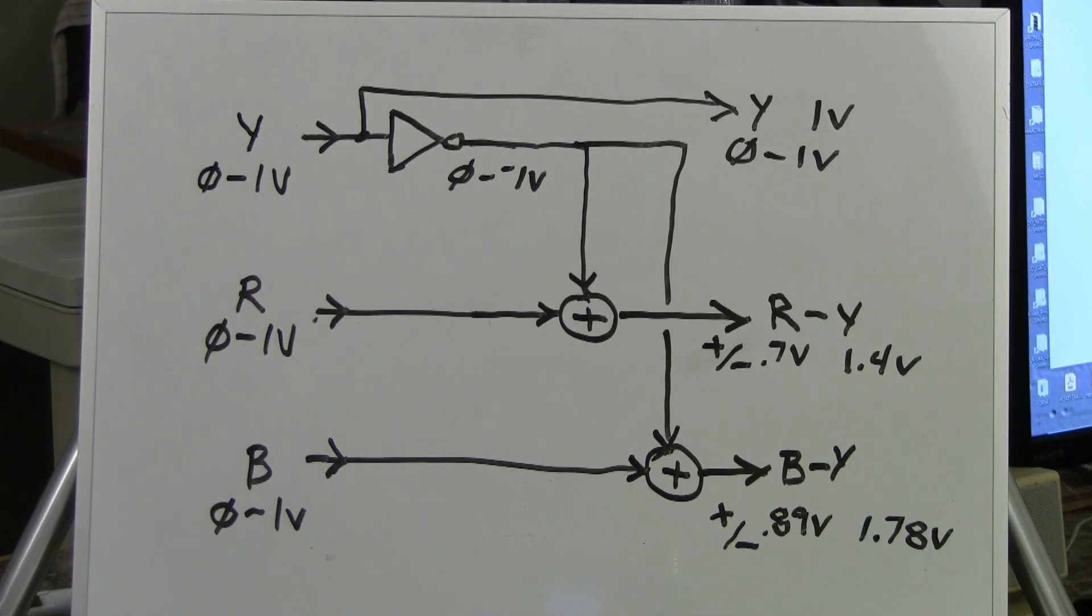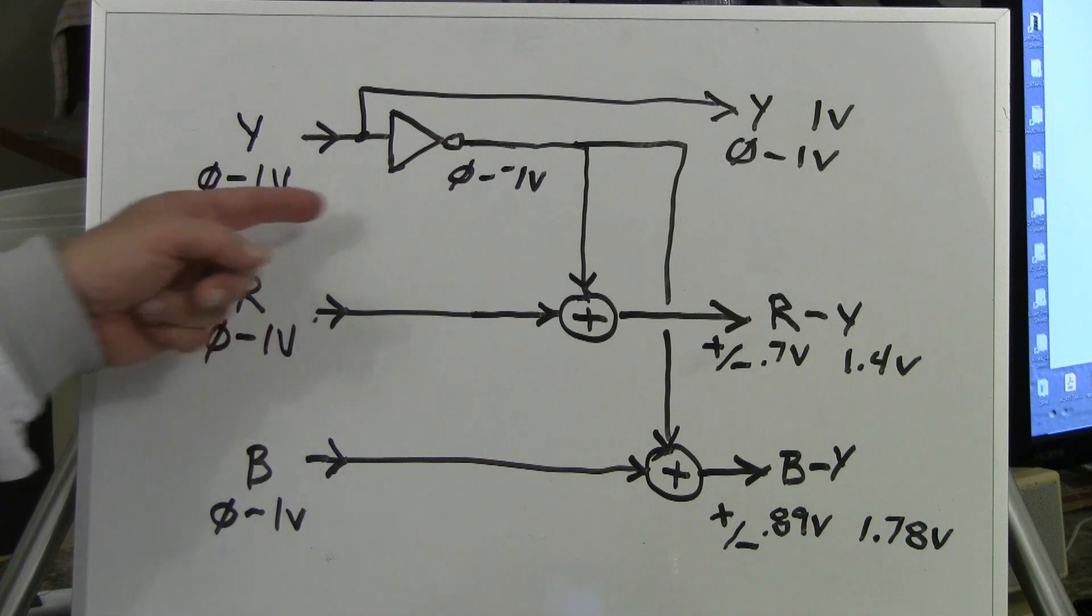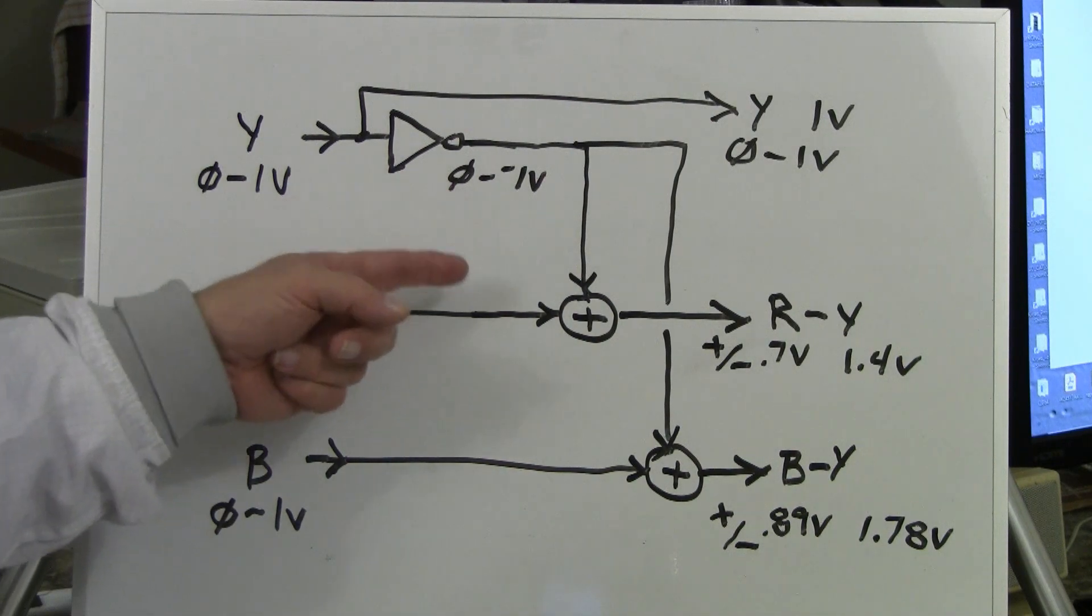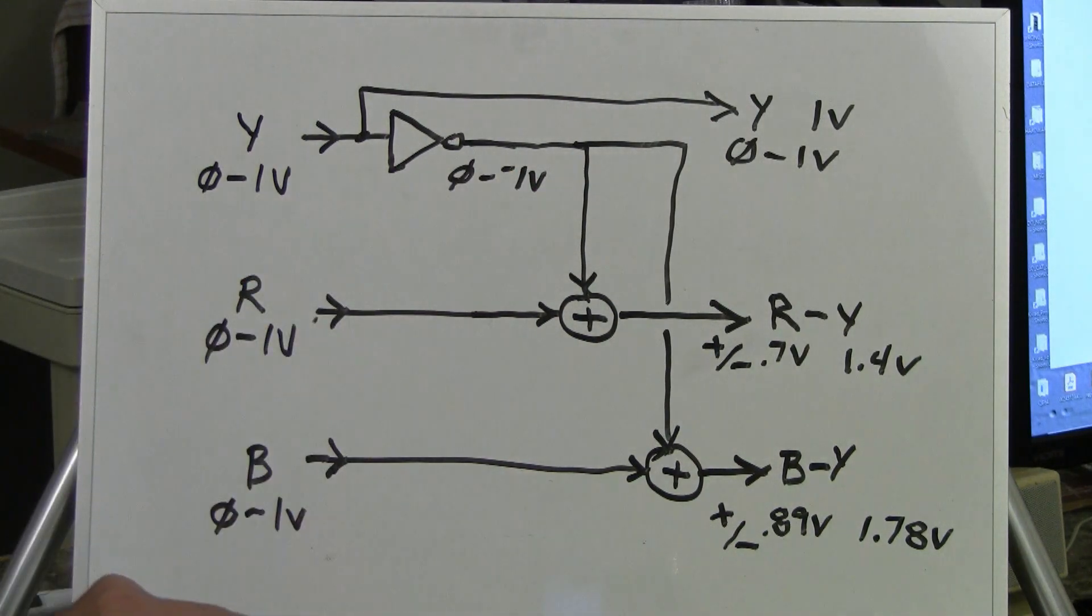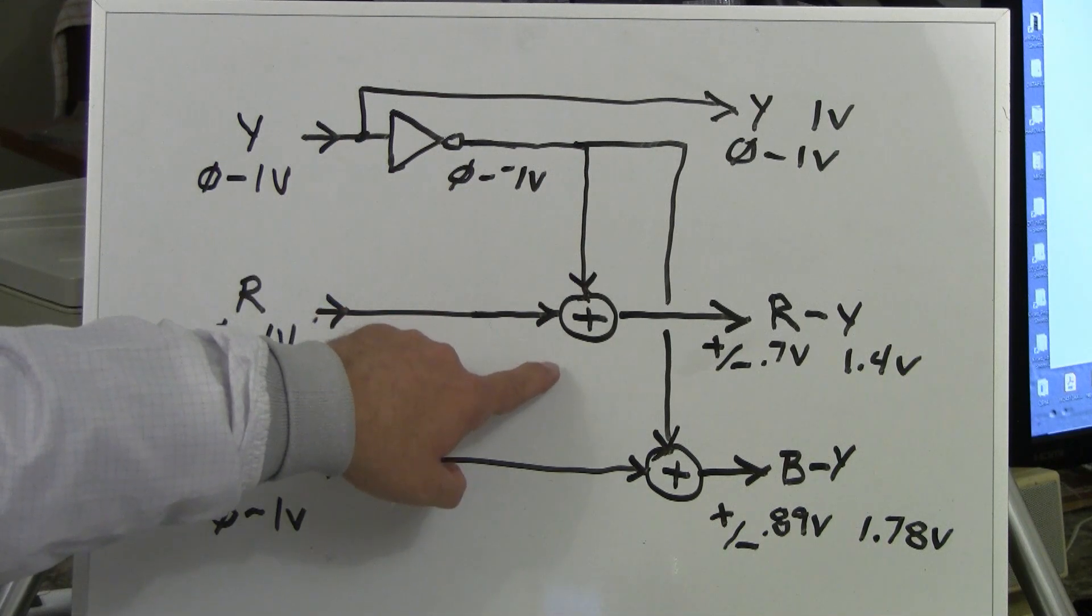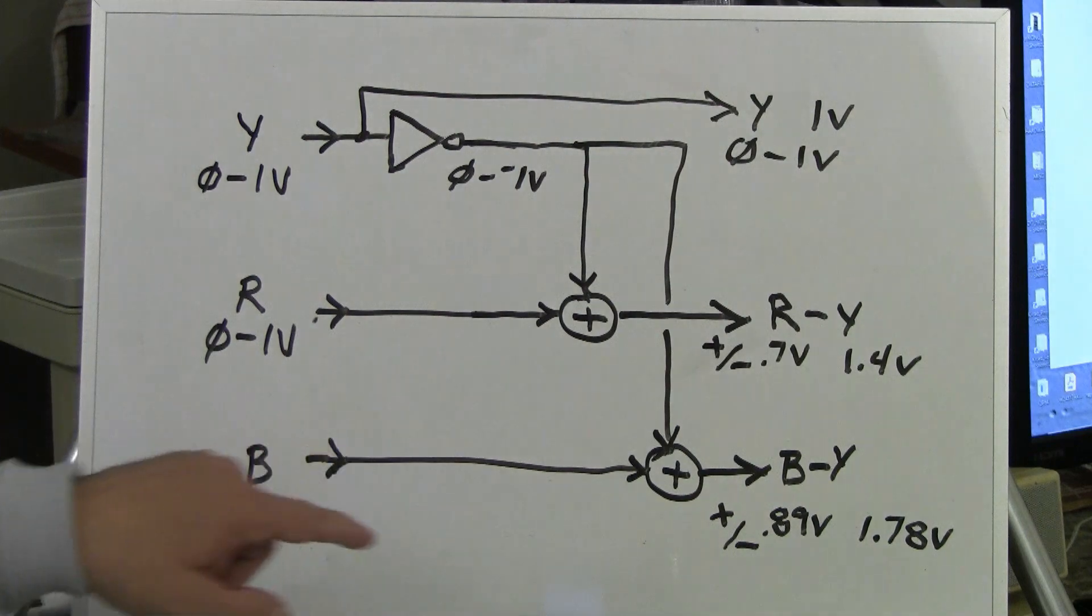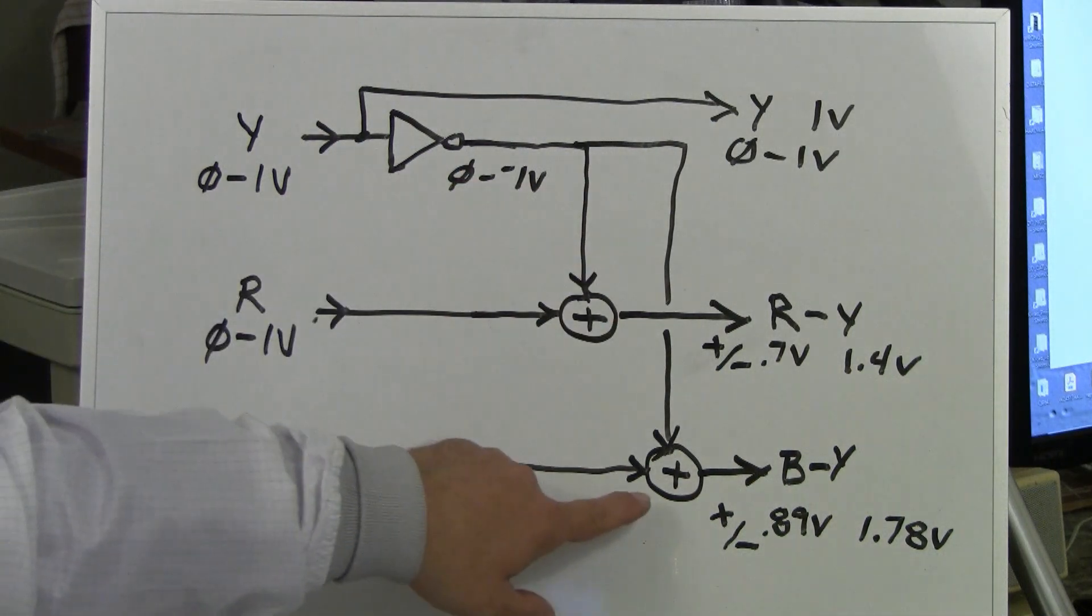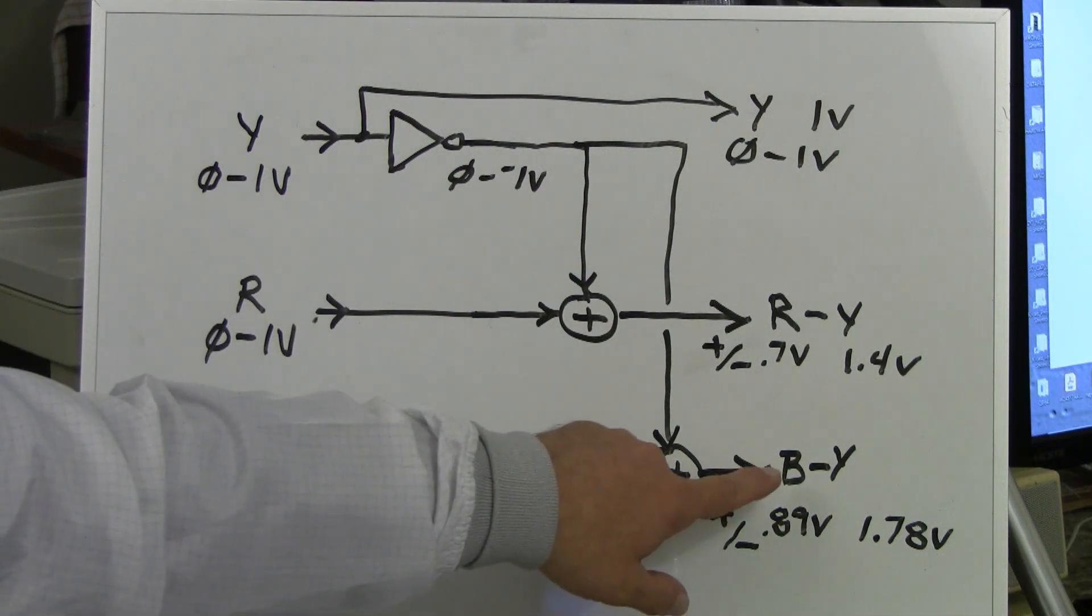In the next stage of the process, we generate two color difference signals. They're called difference signals because we are subtracting. The way we subtract in electronics is we take one signal and invert it. So where this Y signal was originally 0 to plus 1 volt, it is now 0 to minus 1 volt. So when we add it, it's exactly like subtracting it. So we bring in our 1 volt red signal and we subtract Y from it and we get R minus Y. We do the exact same thing with the blue signal, which is 0 to 1 volt. We subtract the Y signal from B and we get B minus Y.